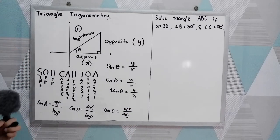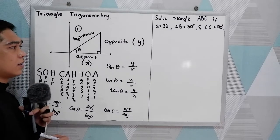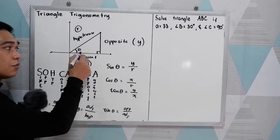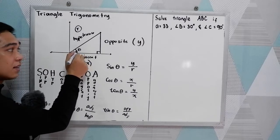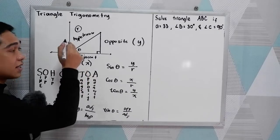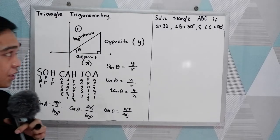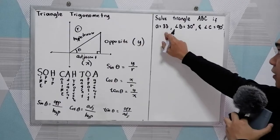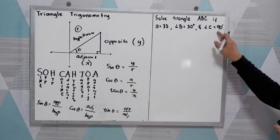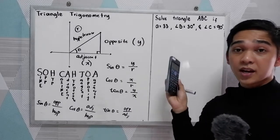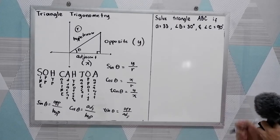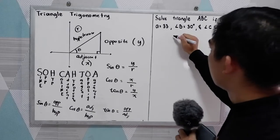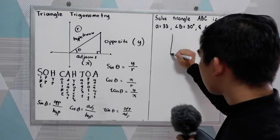So that is our SOHCAHTOA. Again, this is only applicable for right triangles in solving right triangles. First, locate your theta or the given angle, then label the opposite side, adjacent side, and the hypotenuse. Now, to apply this, let's have this problem: Solve triangle ABC if A is equal to 33, angle B is equal to 30 degrees, and angle C is equal to 90 degrees. Prepare your calculator.